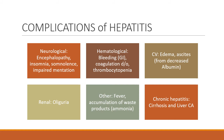When hepatitis B becomes chronic is where we see most of our complications. Neurologically, the patient can develop encephalopathy, insomnia, or somnolence and impaired mentation. Hematologically, there can be bleeding, usually in the GI tract, coagulation disorders from impaired clotting, and thrombocytopenia from spleen involvement.